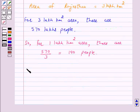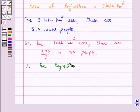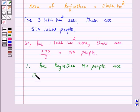So for Rajasthan, 190 people are there per km².